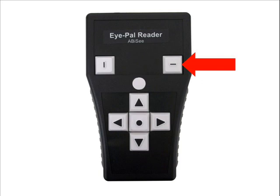Below the Recall button, in the middle of the keypad, is the Help button. It is a white circle button with no tactile markings. Press this button to hear a quick overview of how to use the device.